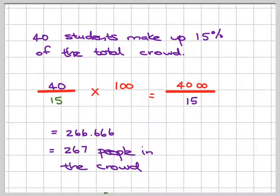So we're going to round it to 267. So there are 267 people in the crowd and our students are only 40 of them and that makes up 15%.